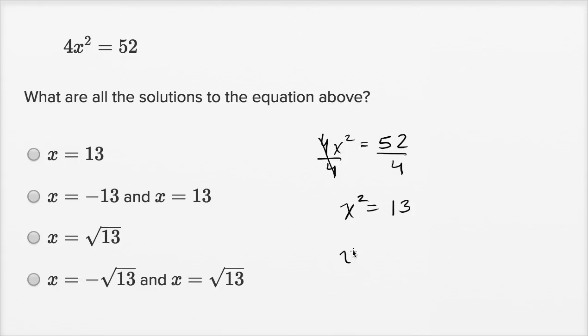So if x squared is equal to 13, x could be the positive or the negative square root of 13. So x is going to be equal to the positive or negative square root of 13.